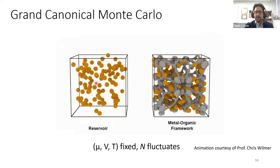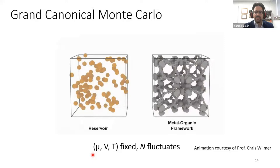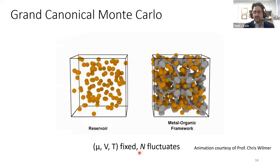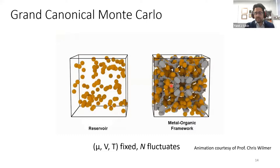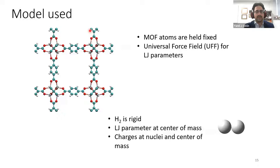The way we evaluate these materials is using grand canonical Monte Carlo (GCMC). Grand canonical stands for the statistical mechanics ensemble where we fix the chemical potential, volume, and temperature, and the number of molecules is allowed to fluctuate. We run our simulations and once converged, we extract the number representing the amount stored at those conditions. We've found that for the vast majority of cases, holding atoms fixed at crystallographic positions works really well, and using generic force field parameters also works well.